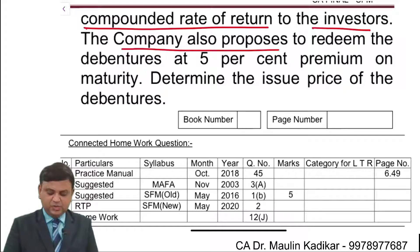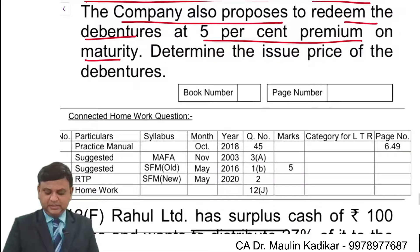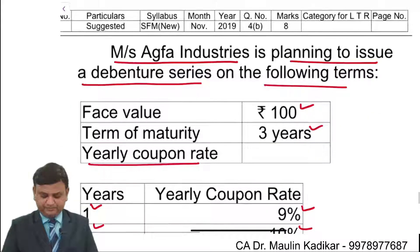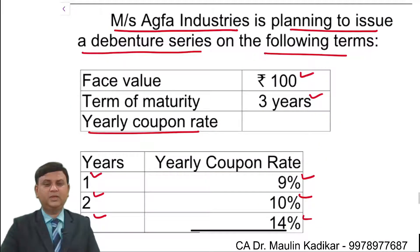The company also proposes to redeem the debentures at 5% premium on maturity. Determine the issue price of the debenture. That is the question. Everybody is requested to calculate the answer, then I will do it for you.